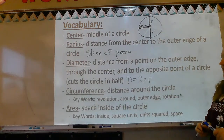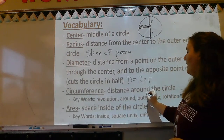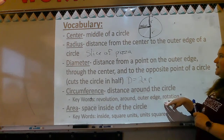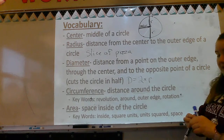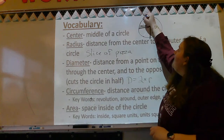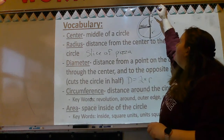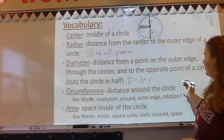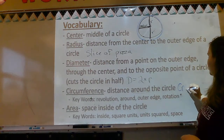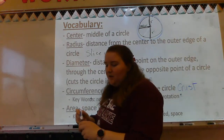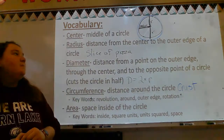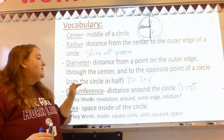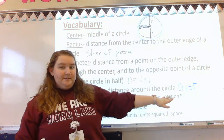Next, circumference. Circumference is the distance around the circle. Keywords: revolution, around, outer edge, rotation. The circumference is anything on the outside of the circle — if I go all the way around, how long does that take me? I like to call this my crust. Circumference is the crust of your pizza. So radius is a slice, diameter cuts your pizza in half, and circumference is the crust.